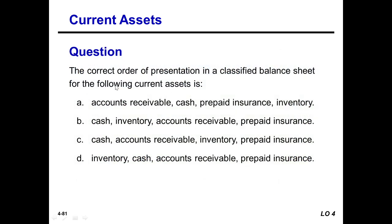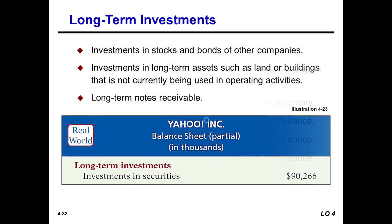Question: The correct order of presentation in a classified balance sheet for the following current assets is: Cash, Accounts Receivable, Inventory, Prepaid Insurance.